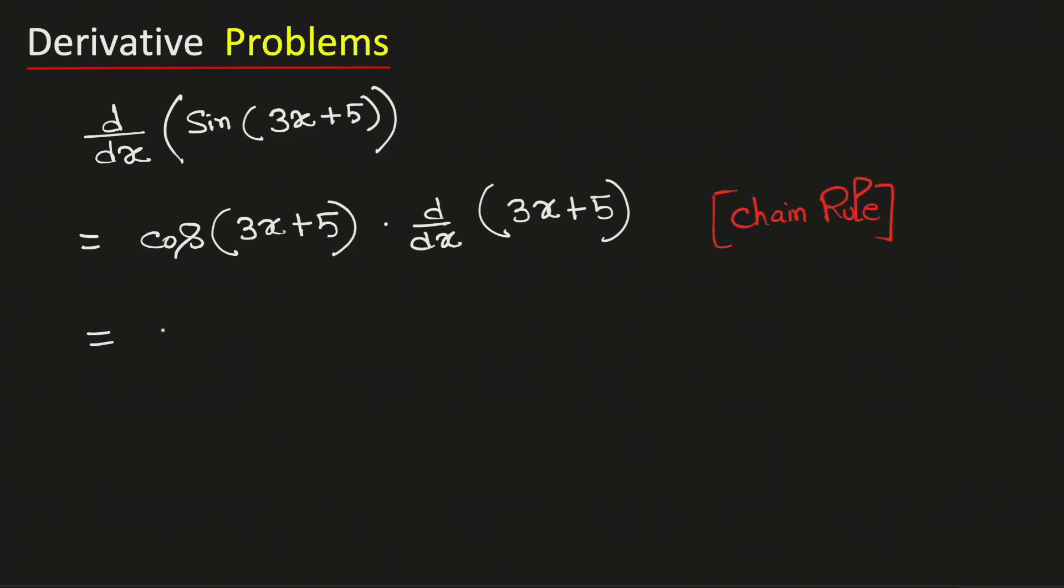We will write this cos function as it is. And the derivative of 3x is 3 and the derivative of 5 is 0 as 5 is a constant.